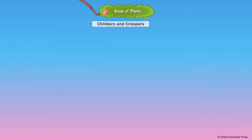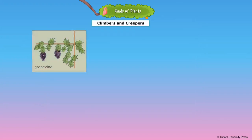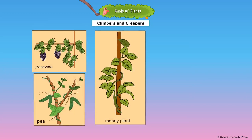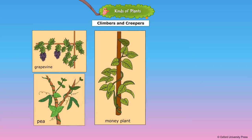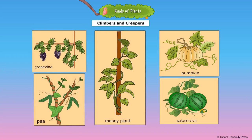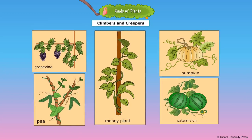Both climbers and creepers are weak-stemmed plants. Plants that climb onto other plants or objects are called climbers. Plants that grow along the ground are called creepers.